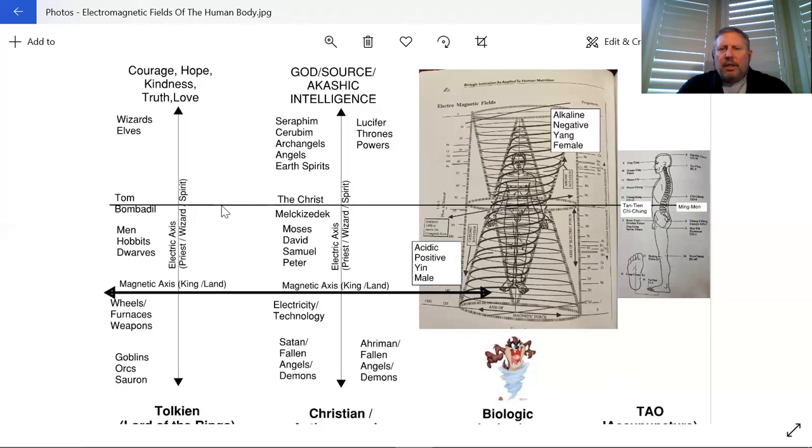This is where we have Melchizedek that we talked about earlier in that king-priest as the starting point. Melchizedek is said to be a Christophany, a pre-incarnation of Christ. In other systems, Christ is a Melchizedek being. There's many beings that are like Melchizedek, these incarnations of this king and priest on the earth.